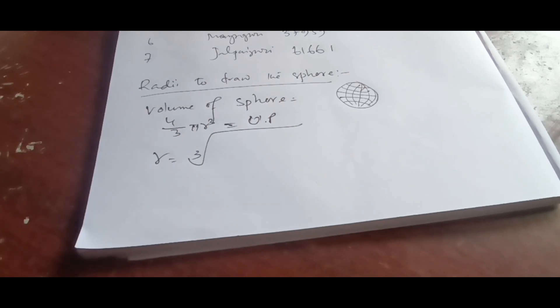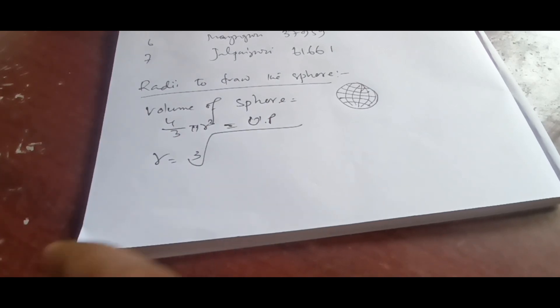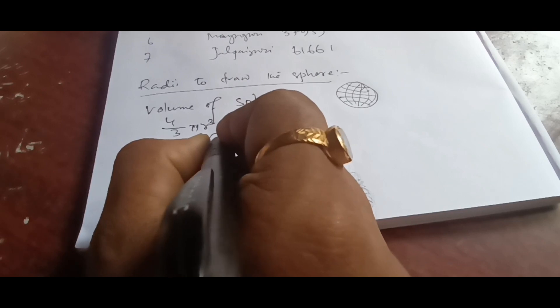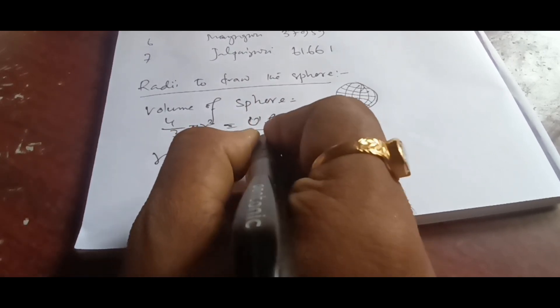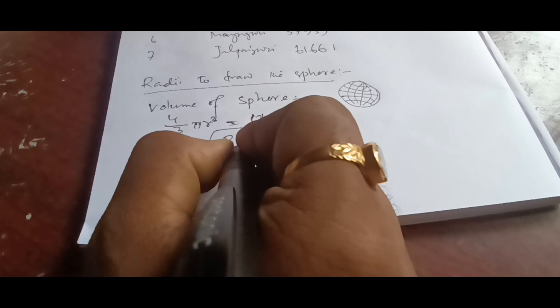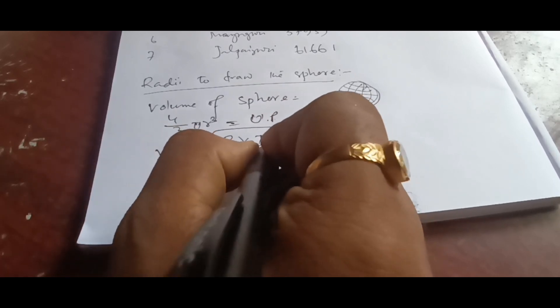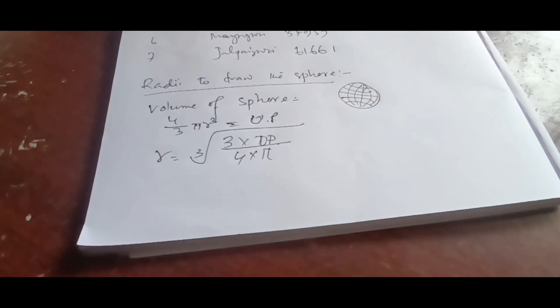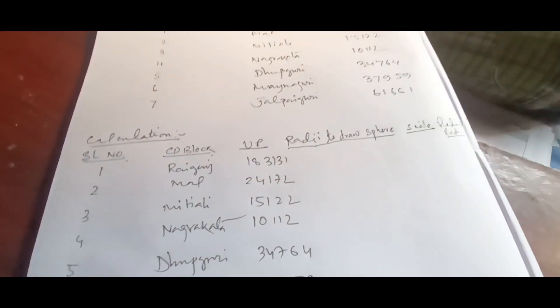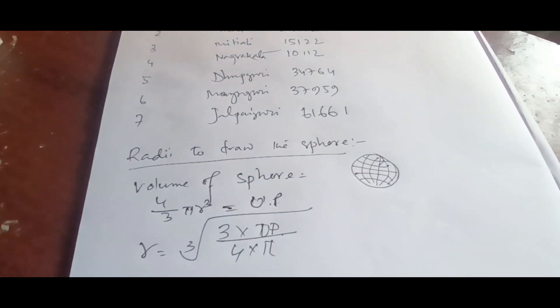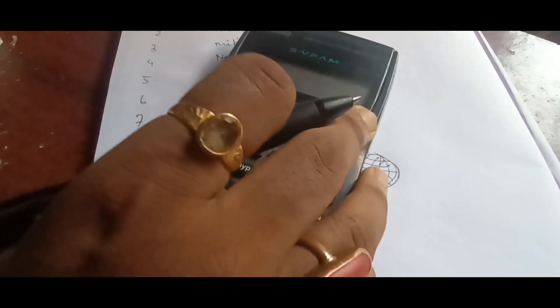We'll write 3 into total population or urban population, whatever is given, divided by 4 into pi. This is the formula. By applying this formula only we will be calculating the radii of the different urban populations of the different CD blocks. Let me show how to put the formula, and thereafter you will be doing the similar procedure.